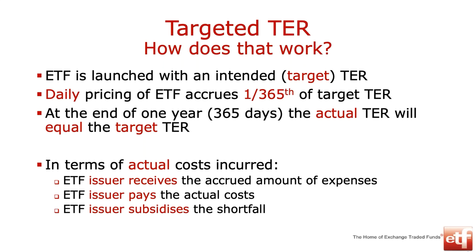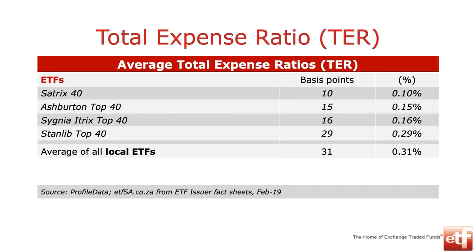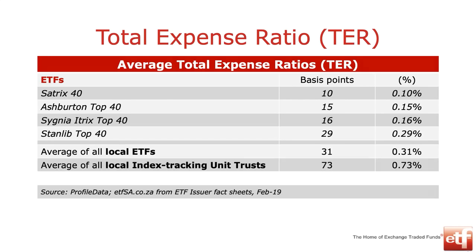When we compare TERs across different products in South Africa, the average of all local ETFs listed on the JSE is currently just over 0.3% - 31 basis points. When we look at the average of all local index tracking unit trusts, that total expense ratio is almost double those of the ETFs. And the average of all South African general equity funds sits at a cost that is more than five times the total expense ratio of a locally listed ETF.